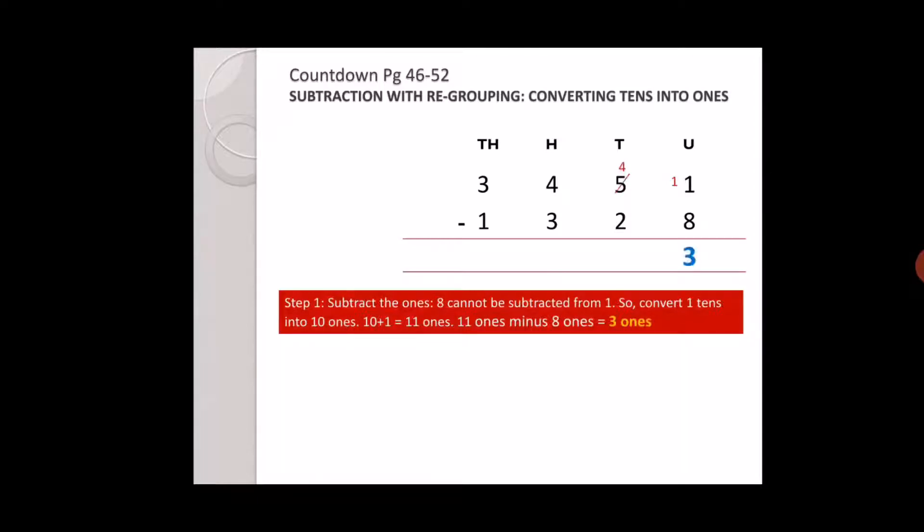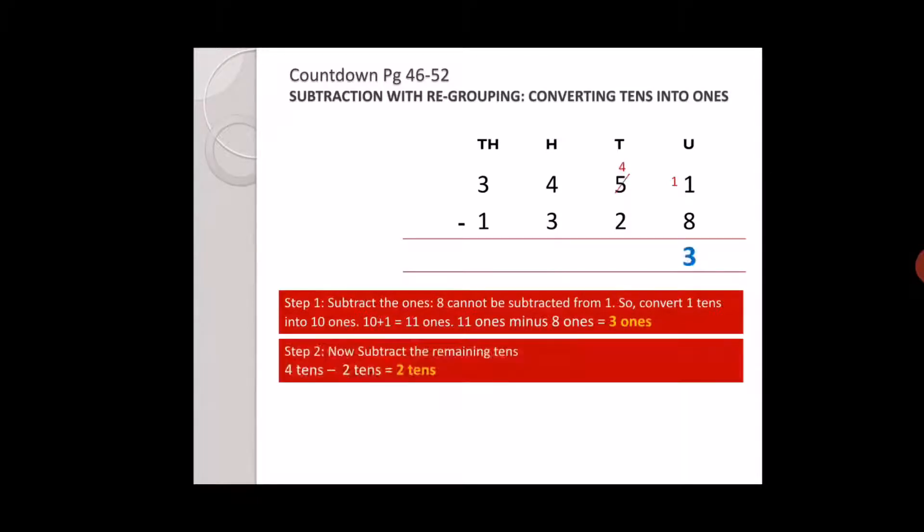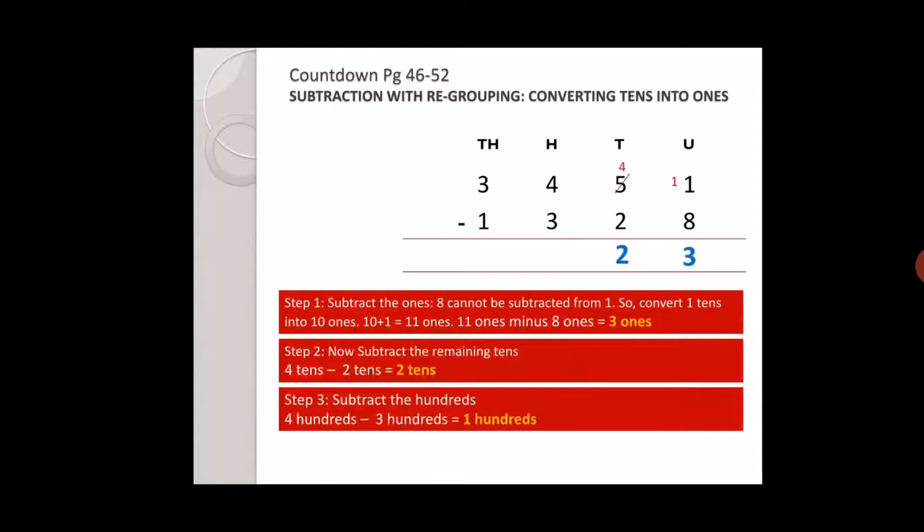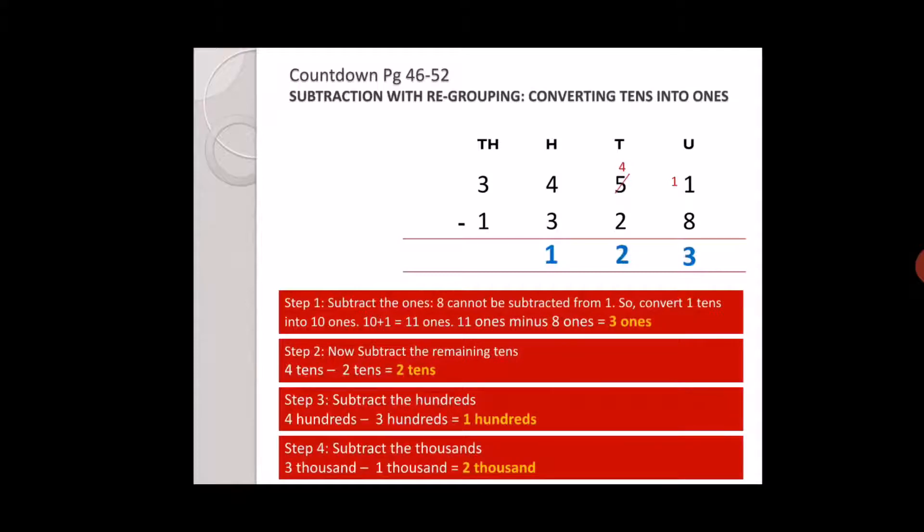Four minus two is two. In the hundreds place there is four and three, four minus three is one. In the thousands place there is three and one, three minus one is two. The answer is two thousand one hundred and twenty three.